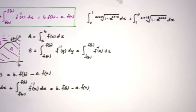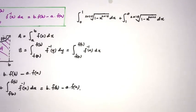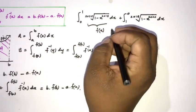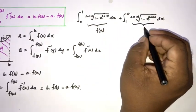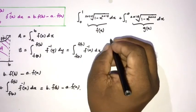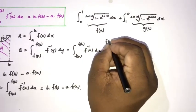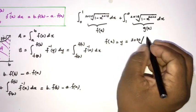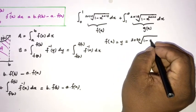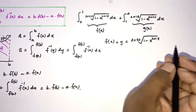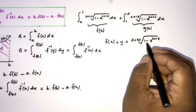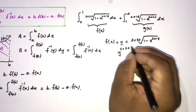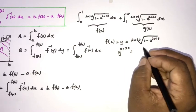Now we are going to solve the question. We take this function as f(x) and this function as g(x). If we take f(x) = y, this is equal to the 2020th root of (1 minus x) raised to the 2018th power. If we raise both sides to the 2020th power, we get y^2020 = (1 minus x)^2018.